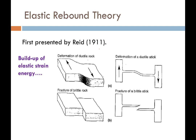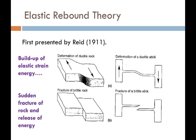Once the rock fractures, it releases all of this energy, which is then sent out in the form of seismic waves. It's that sudden fracture of the rock that causes the release of energy — what we know as seismic waves, typically in the form of body waves. Elastic rebound theory was presented in 1911 by Reid. It's been around for quite a while.